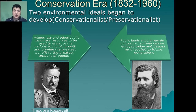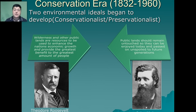At the heart of the Conservation Era, two environmental ideals began to develop: that of the conservationists and that of the preservationists. The conservation idea is that wilderness and other public lands are resources to be used to enhance the nation's economic growth and provide the greatest benefit to the greatest amount of people — championed by President Theodore Roosevelt. The preservationist ideal saw public lands as something that should remain untouched so that they can be enjoyed today and passed unspoiled to future generations, championed by the founder of the Sierra Club, John Muir. Conservationists would see forests as potential fuel and building materials, whereas preservationists would see a forest as habitat for wildlife and a place to visit for camping and hiking.